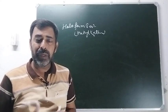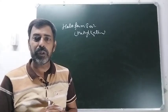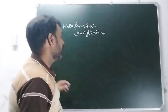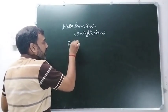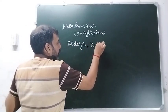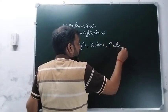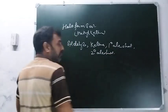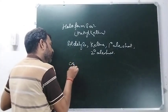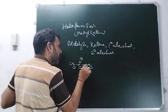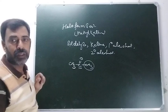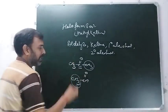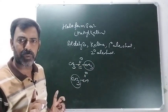Methyl ketone word आते ही लगता है it is only for the ketones - but it is not only for the ketones। यह test है: aldehydes के लिए, ketones के लिए, primary alcohols के लिए, और secondary alcohols के लिए भी। Methyl ketone यानि carbonyl carbon के बगल में एक methyl group लगा हो। Aldehyde में होगा तो CH3CHO - एक तरफ methyl group लगा है। दोनों तरफ भी होगा तो कोई problem नहीं होती।